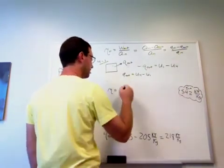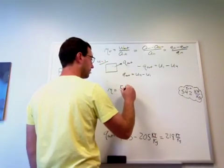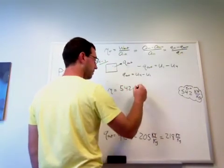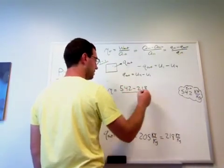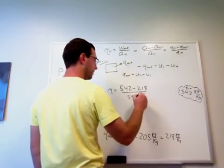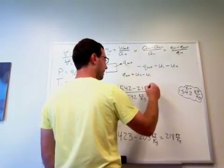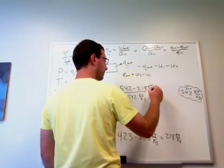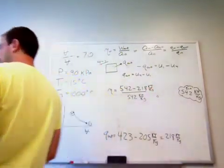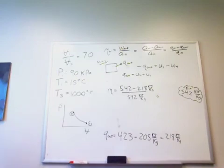We need Q in first, 542 minus 218 over 542. The units on the top and bottom are the same, so this has no units.